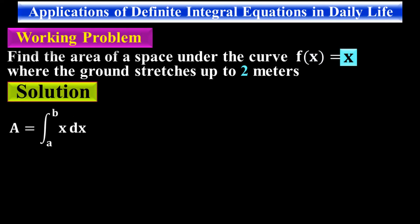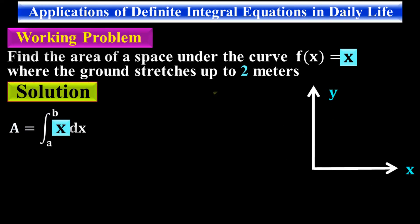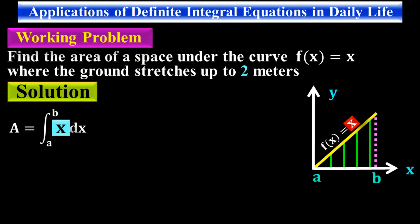We write the area as the integral of x dx with limits from a to b. Because of these limits it is called a definite integral equation — previously we did indefinite integrals without limits. This is the function x; let's draw it graphically. The yellow line is the function x, and the area under that yellow curve is our required space. The limits run from a to b under this yellow curve, which is the function x.